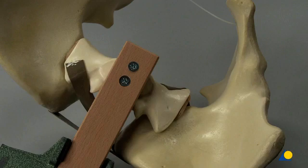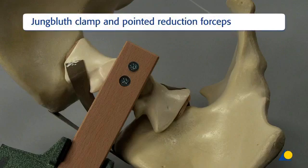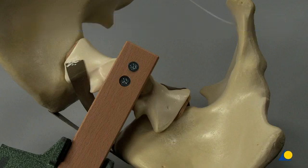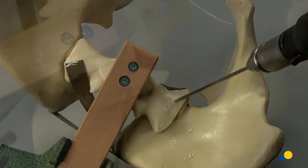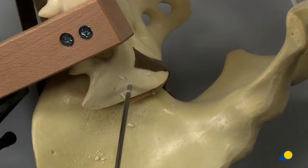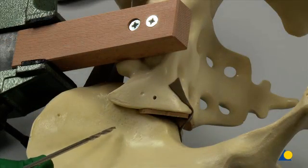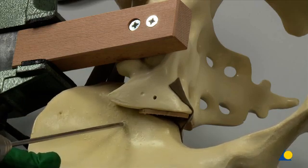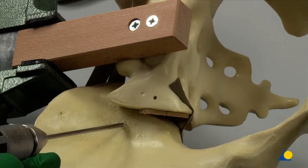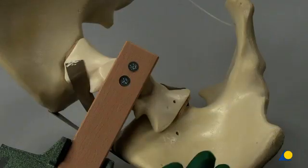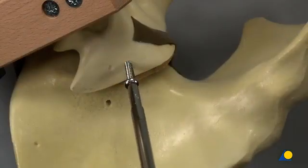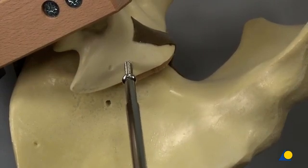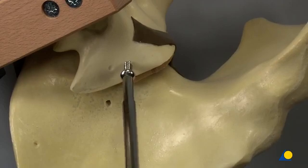Different reduction techniques. Reduction using a Jungblut clamp and the pointed reduction forceps. Expose the lateral part of the sacral ala and drill a 3.2 mm hole respecting the spatial orientation of the sacro-iliac joint. The position of this hole should allow later plate placement proximally and distally to this anchoring screw. Make a second hole in the iliac bone close to the sacro-iliac joint. Insert two 4.5 mm cortex screws of appropriate length.